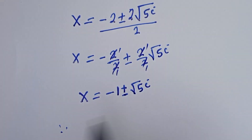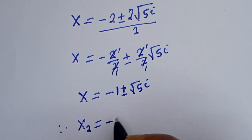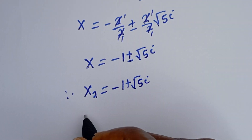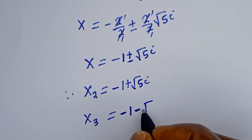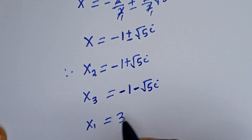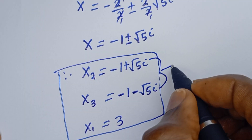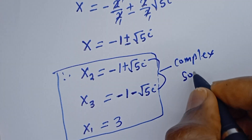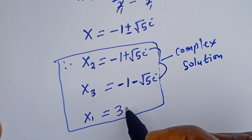Therefore, the other roots of the equation are: s2 is equal to negative 1 plus square root of 5 times i, and s3 is equal to negative 1 minus square root of 5 times i. We know that s1 is equal to 3. These are the final answers. Note that s2 and s3 are complex solutions, so the only real solution is s1 equals 3.